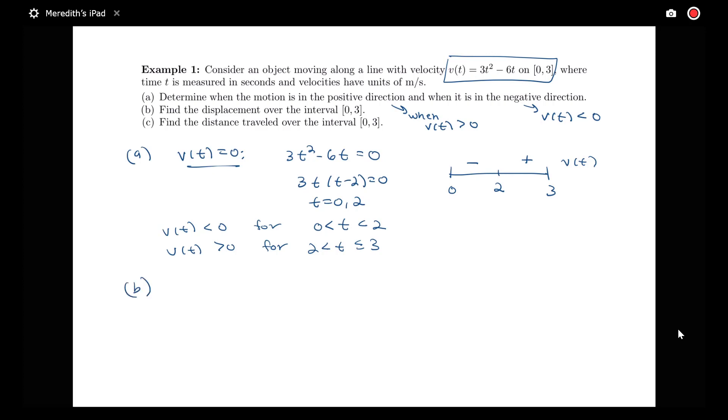That answers the first part of the question and will be relevant to the questions about displacement versus distance traveled. It may help to think about what the picture of the velocity curve looks like. We have a parabola here. We already found that our velocity was zero at 0 and 2, so we're crossing the t-axis at 2, and we go up to 3.